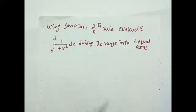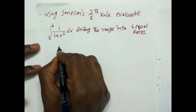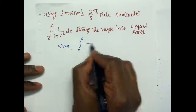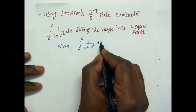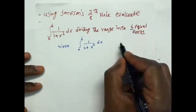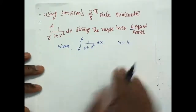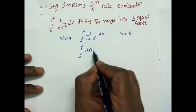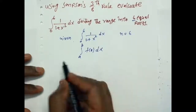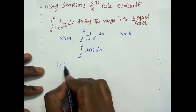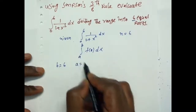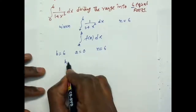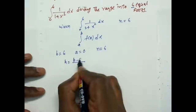Divide the range into 6 equal parts. Given integral from 0 to 6 of 1 by 1 plus x square dx, with n equal to 6. The general integral formula is integral from a to b of f of x dx. Comparing these two: b is the upper limit 6, a is the lower limit 0, n equals 6. Now we have to find h. The formula for h is b minus a by n.